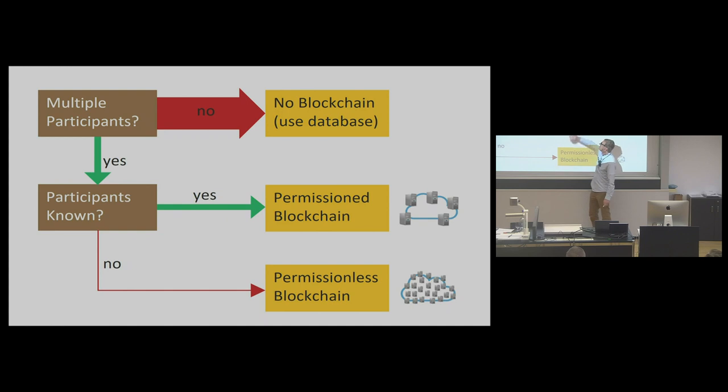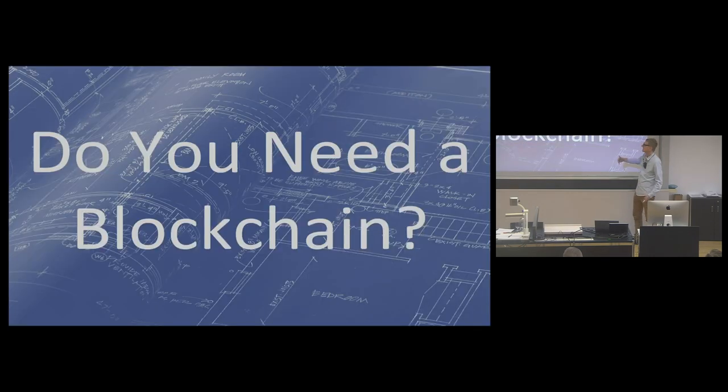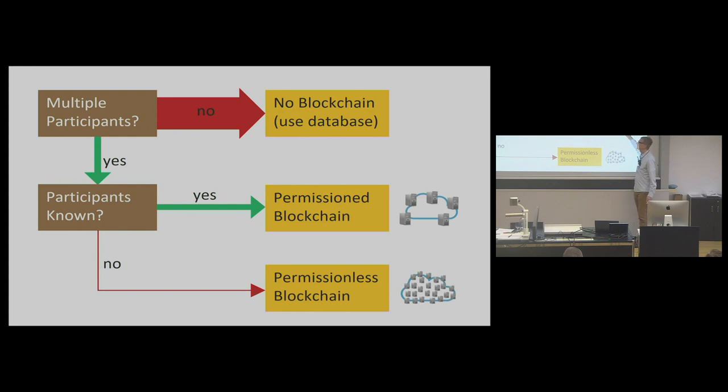If you don't have multiple participants, just use a database, basically, as in the old days. If you have multiple participants, and that's maybe only in 10% of the cases, then the question is, are these participants known? If they are known, let's say multiple companies together, or like my picture here, these organizations together, then you can have something like a so-called permissioned blockchain, where you have a blockchain among those five nodes and they store the data. And only if you want to have a permissionless blockchain, everybody can participate, then you should go here.